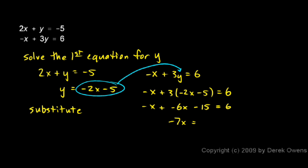And then if I add 15 to each side, that 15 ends up going away on the left and moving over to the right side, and I get 21. So -7x = 21, and then divide each side by -7 and I get x = -3.